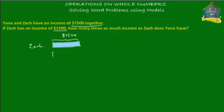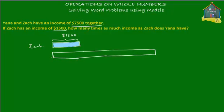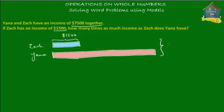Now, how much is Yana earning? Let's put a block in the model diagram which shows Yana's income. This is Yana's income, and how much Yana is earning, we don't know — let's just put her name next to it and paint her income in pink. We do know that together, Zach and Yana are earning $7,500, so their income together is $7,500.